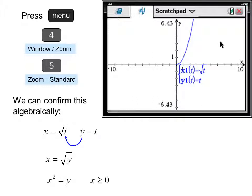Squaring both sides we get x squared equals y, where x is greater than or equal to zero, or y equals x squared where x is greater than or equal to zero, which we recognize as a parabolic function.